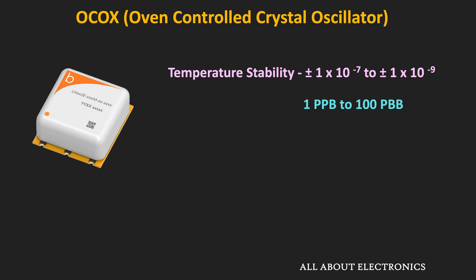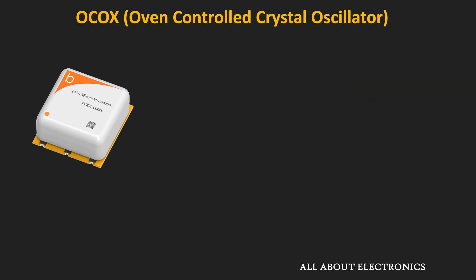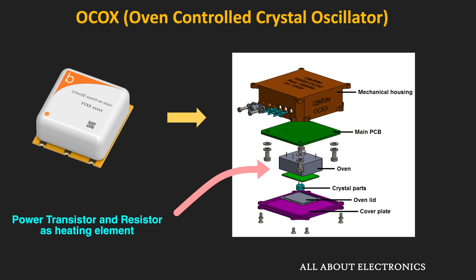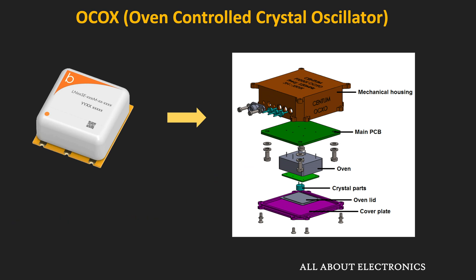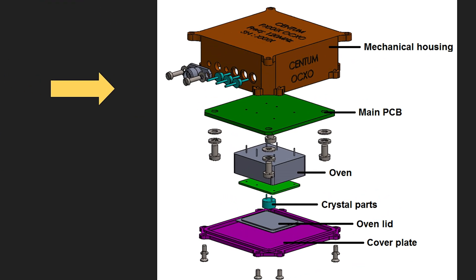The aging rate of OCXOs is also very low. Inside the OCXO module, there is a mini oven where a power transistor and resistor are used as a heating element. A thermistor serves as the temperature sensor to monitor the oven temperature. Using an additional control circuit mounted on the main PCB, this oven is maintained at a constant temperature. On the other side of the oven is the crystal oscillator itself.